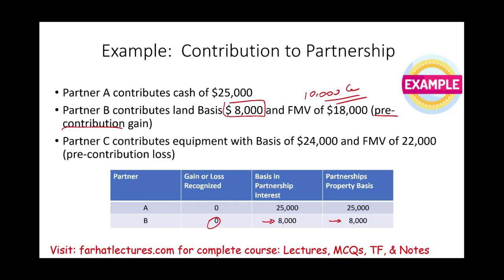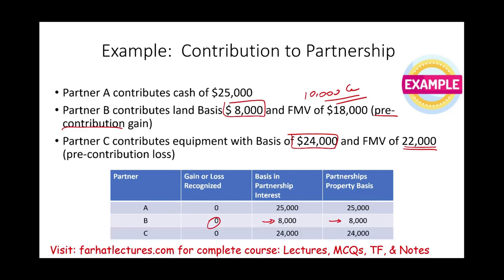Partner C contributed equipment with a basis of $24,000 and fair market value of $22,000. What we have here is a pre-contribution loss. This equipment, if Partner C sells it, they would realize a loss. Well, they contributed it — there is no loss recognized, no gain. The basis of the partner becomes the basis in the partnership interest: $24,000. And the original basis of the equipment becomes the partnership property basis, which is $24,000. Simply put, the basis transfers.